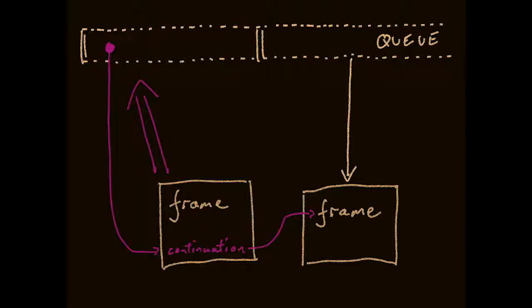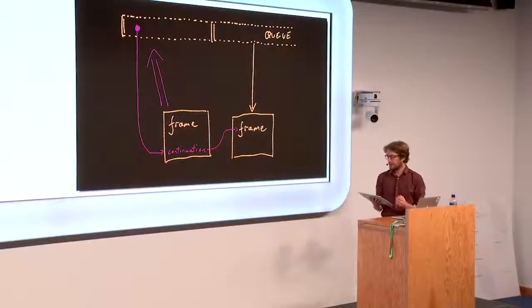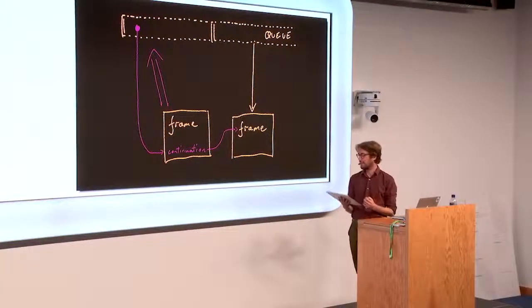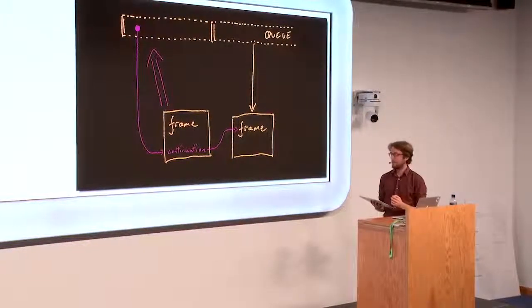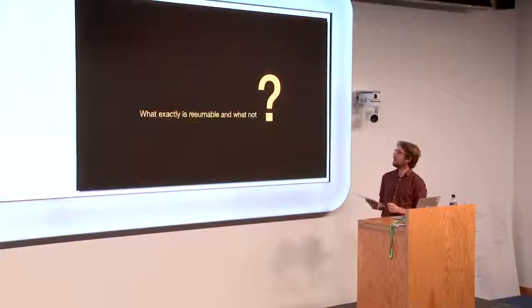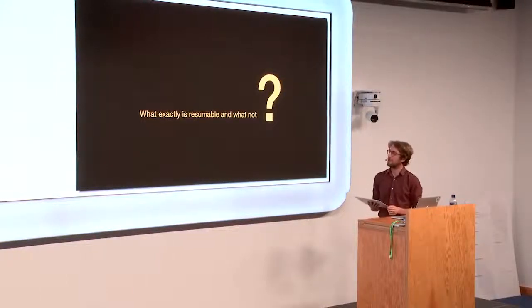Now, a question I have about this is, if a fiber corresponds to a component, at which points during the reconciliation and render cycle of that component can we save and restore a continuation? This is a genuine question. Basically, my question is, what exactly is resumable and what not?